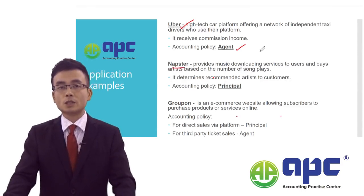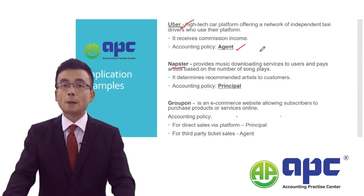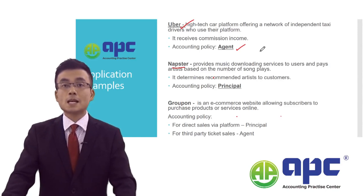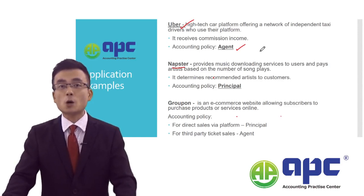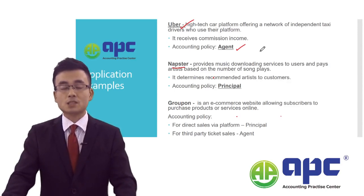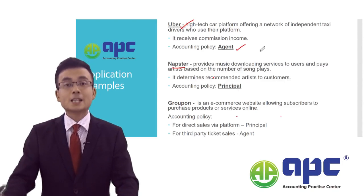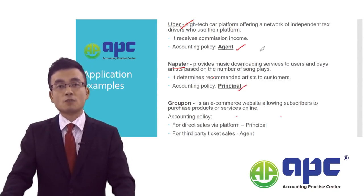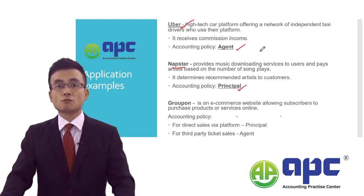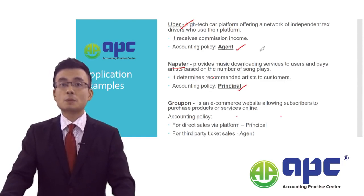The second company is Napster, a music downloading services provider. Because it has the right to recommend which artist to the customer, it determines almost everything. Therefore, Napster concludes it is acting as a principal, and should recognise revenue on a gross basis — meaning it recognises the full revenue and at the same time the corresponding cost of sales figures.